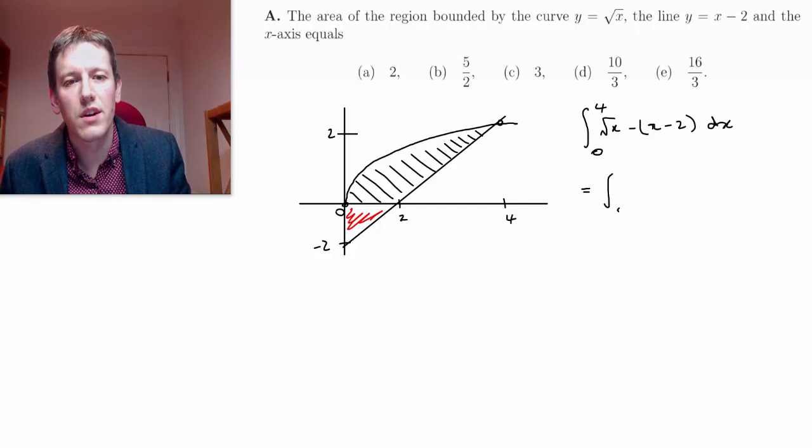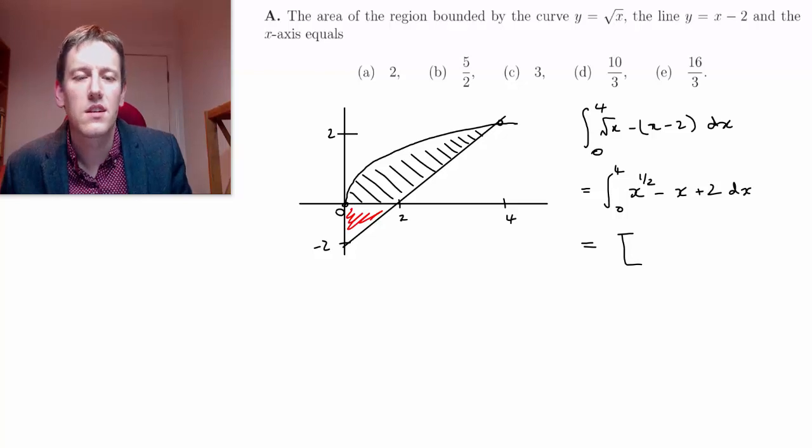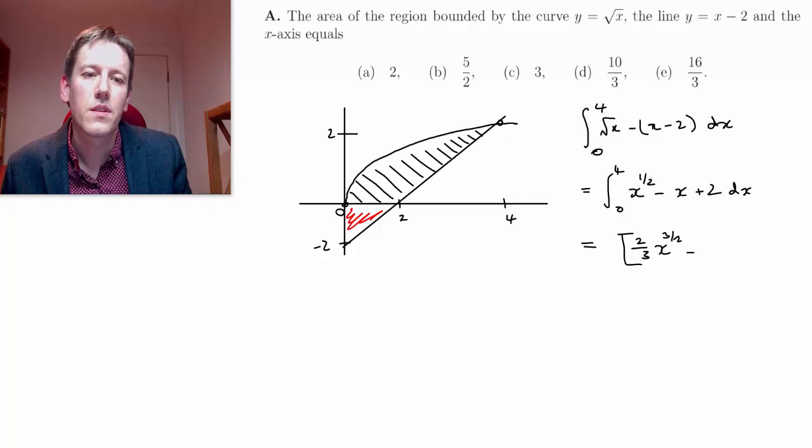So let's write square root of x as x to the half, so I've got x to the half minus x plus 2 dx. We're going to integrate this term by term, so x to the half, increase the power by 1 to get x to the 3 over 2, and divide by the power, so 2 thirds, minus x squared over 2, plus 2x.